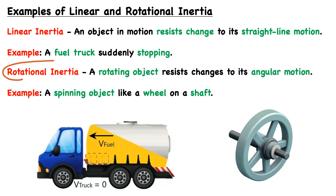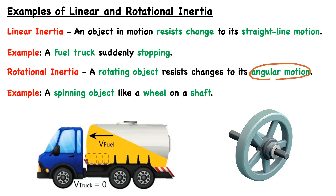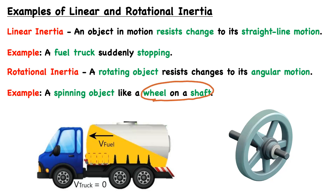Rotational inertia is a rotating object resisting change to its angular motion. This is essentially the same concept as linear inertia, except instead of straight-line motion, rotational inertia refers to angular motion. A classic example is that of a spinning object, such as a wheel on a shaft, which is shown in the right image.